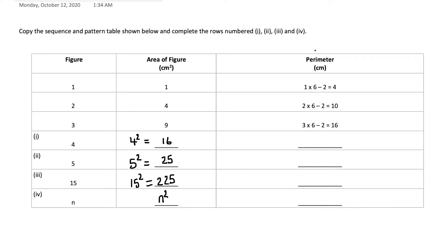Now we move on to the third column, which is the perimeter. We need to look and see if we can identify a sequence or pattern. We can see that the first number is always changing to correspond with the figure in column one. The six is constant and the negative two is also constant. So for figure 4, we write 4 — times 6 is constant, minus 2 is constant — so 4 times 6 is 24, minus 2 is 22.